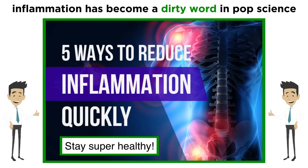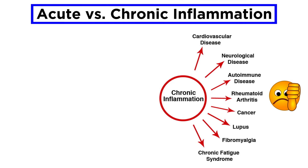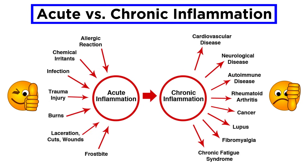Inflammation is sometimes used as a dirty word within the medical and pop science realms, whereby health coaches and social media influencers are full of suggestions for what you should eat or how you should exercise in order to reduce inflammation. While chronic inflammation can have devastating side effects, acute inflammation is an important evolutionary adaptation that is extremely effective at containing the early spread of infectious microbes.